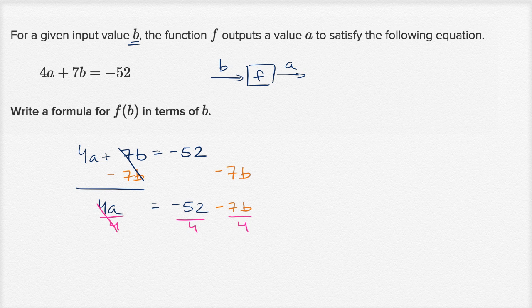And on the left hand side, we got our goal, we are left with an a equals, now what's negative 52 divided by four? Let's think about it. 52 is 40 plus 12. 40 divided by four is 10, 12 divided by four is three, so it's going to be 13, negative 13. So it's negative 13 minus 7 fourths b.